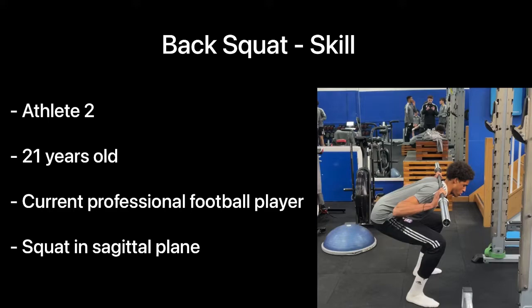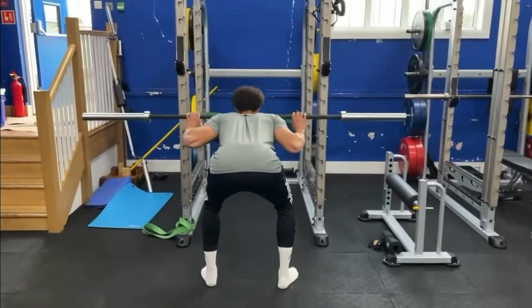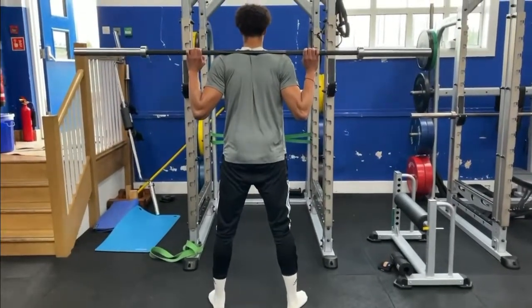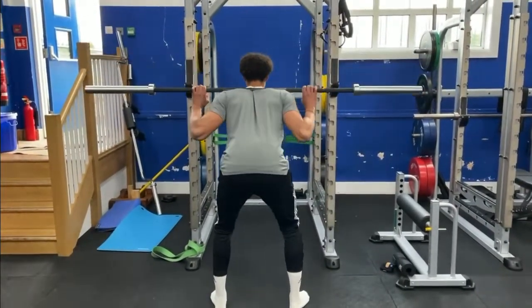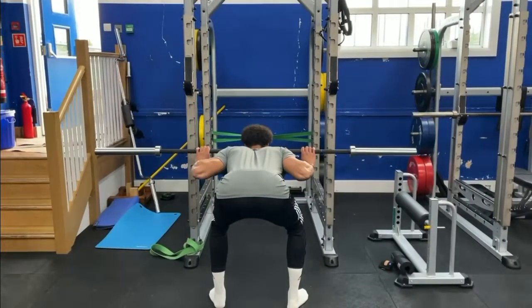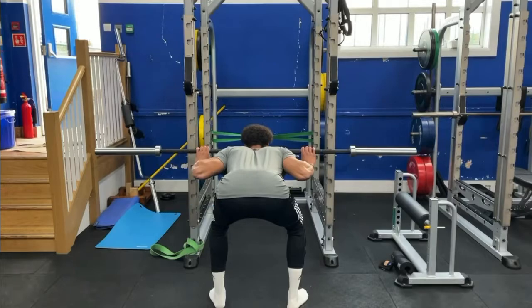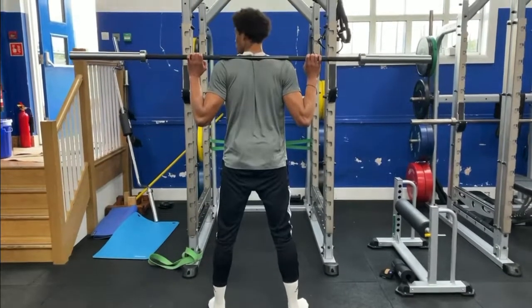Athlete number two is also a current professional football player who is 21 years old, with a skill issue in terms of the back squat. As athlete two descends, we can see that the trunk collapses with the chest not being visible from the front and the head pointing down. Upper body posture is not maintained throughout the descent of the lift.